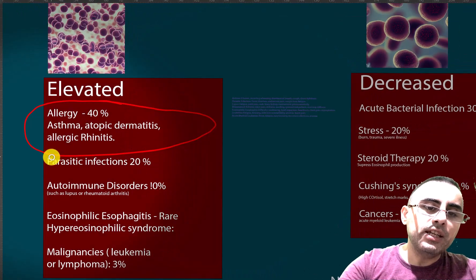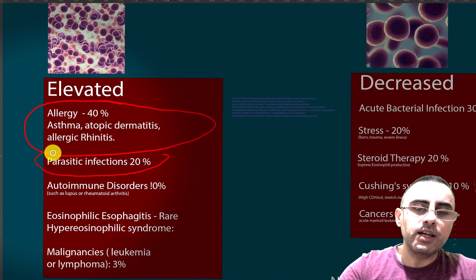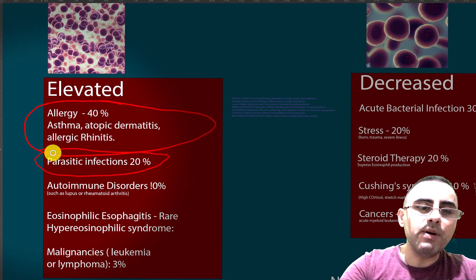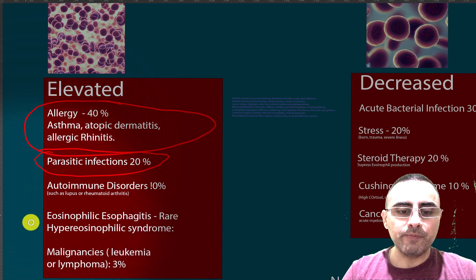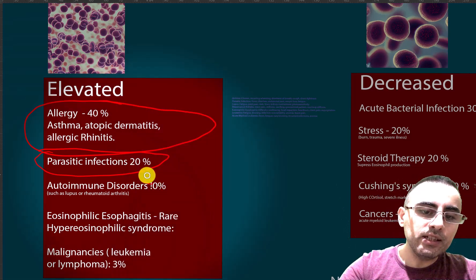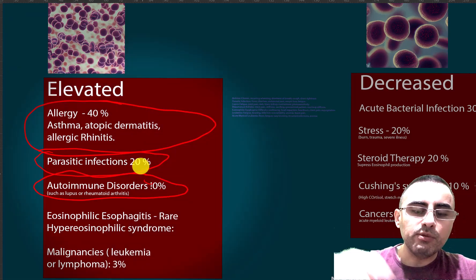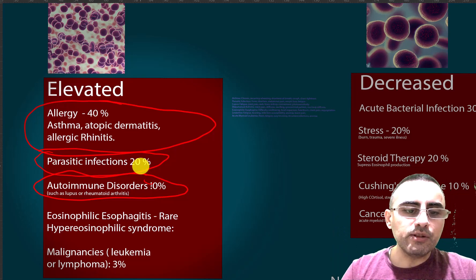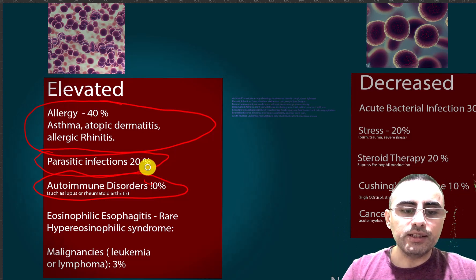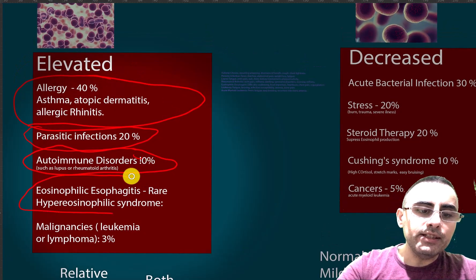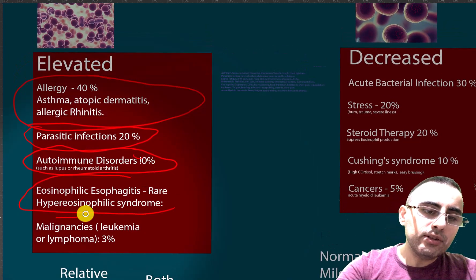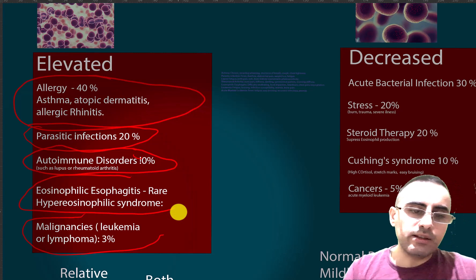Another common cause of eosinophil elevation is parasitic infections — in 20% of cases it is parasitic infection. In 10% of cases it is autoimmune disorders such as lupus erythematosus or rheumatoid arthritis.